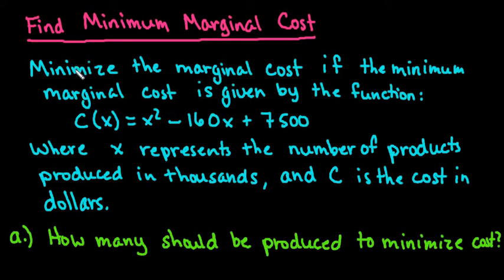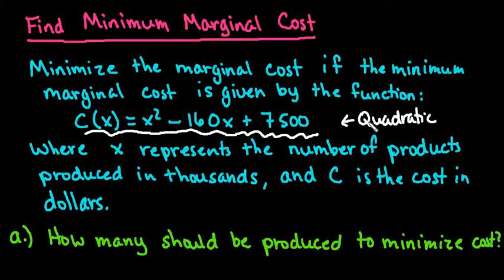We're going to minimize the marginal cost if the minimum marginal cost is given by the function C(x) = x² - 160x + 7500. We have a quadratic function here, and the reason I know it's quadratic is because our highest degree is degree 2.